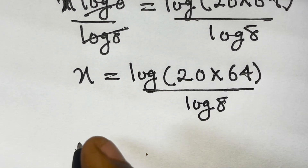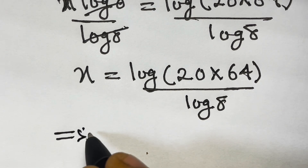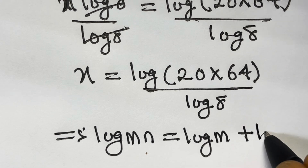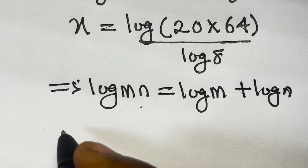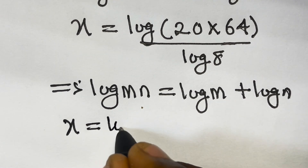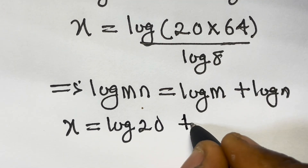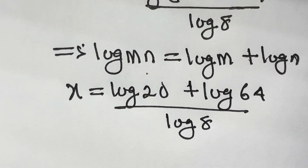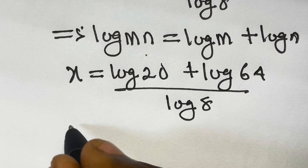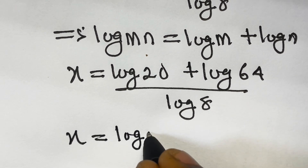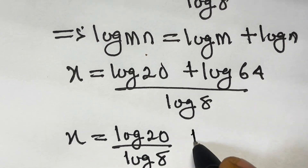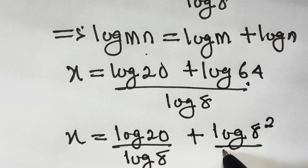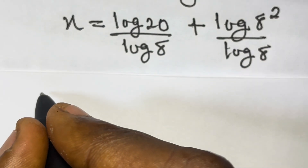Recall that log of m times n equals log m plus log n. So the expression becomes x equals log 20 plus log 64, all divided by log 8. We can express 64 as 8 to the power 2, so log 64 divided by log 8 becomes log of 8 squared divided by log 8.